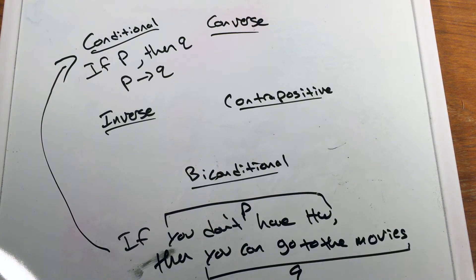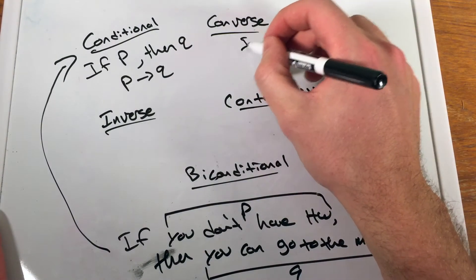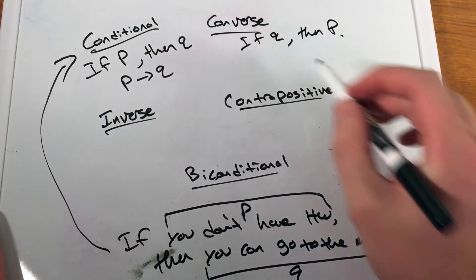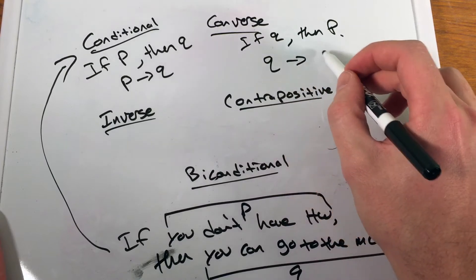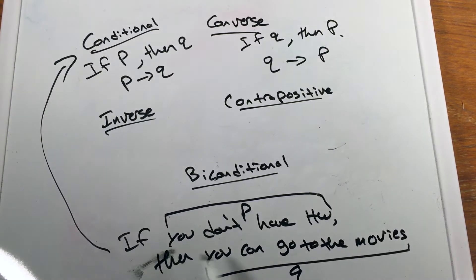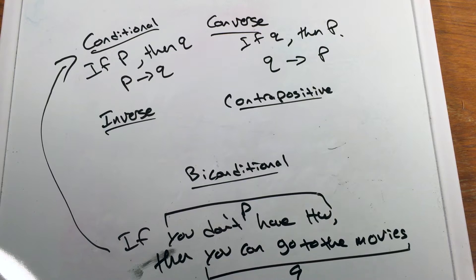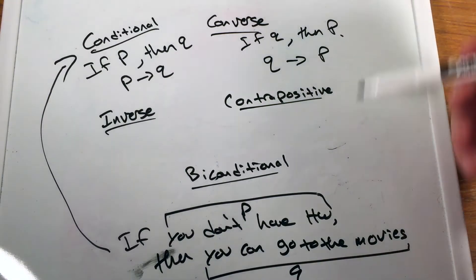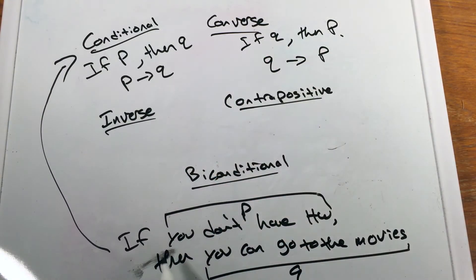The converse of that statement is that we switch P and Q, giving us 'if Q, then P.' We're not going to get into which ones are true or false right now — we just want to understand the differences. So the converse of 'if you don't have homework, then you can go to the movies' would be: if you can go to the movies, then you don't have homework.